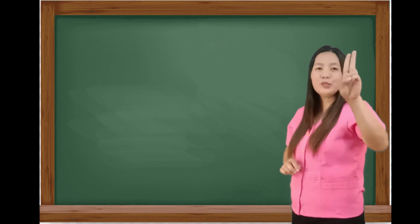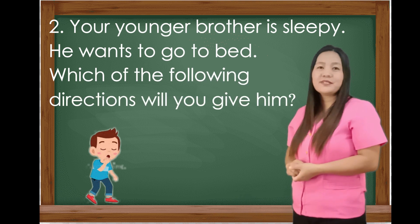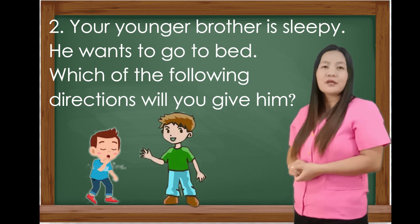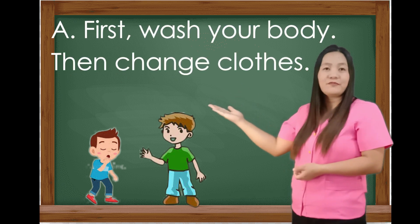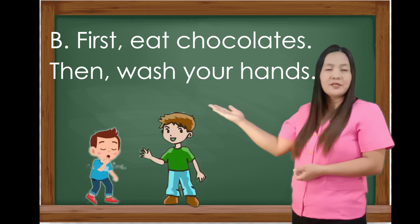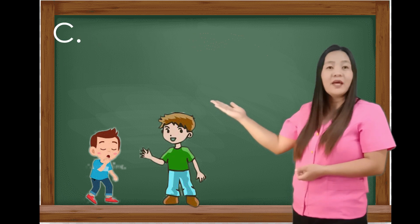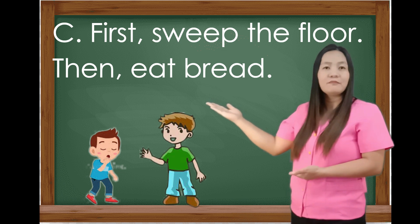Number 2. Your younger brother is sleeping and wants to go to bed. Which of the following directions will you give him? Letter A: First, wash your body. Then, change clothes. Letter B: First, eat chocolates. Then, wash your hands. And Letter C: First, sweep the floor. Then, eat bread.